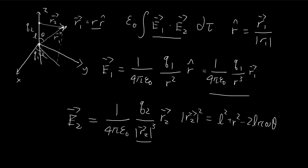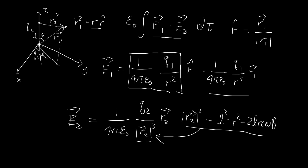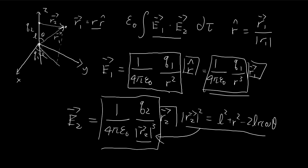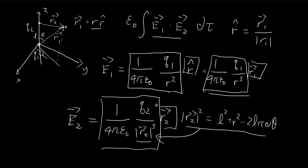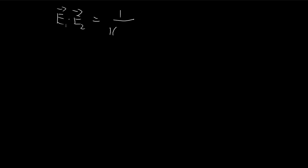So r is the length of this arm. Notice that the electric fields each come in with a scalar component and a vector component. When I take the dot product, the scalars multiply together and the two vectors multiply together. So the scalar part gives us q1 q2 divided by r² times |r2|³, and then we have the dot product of r1 and r2.